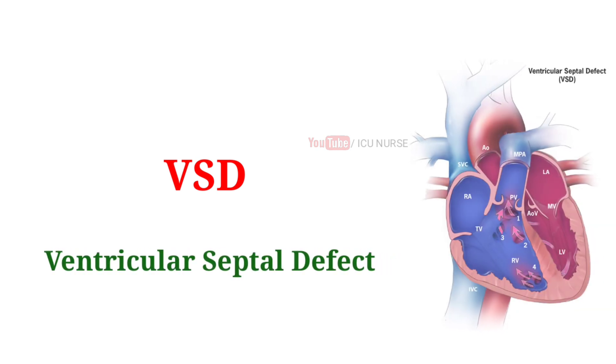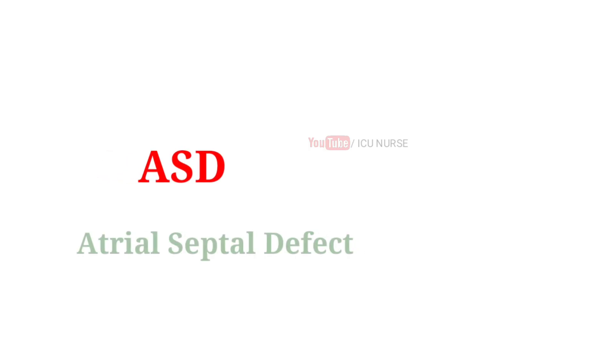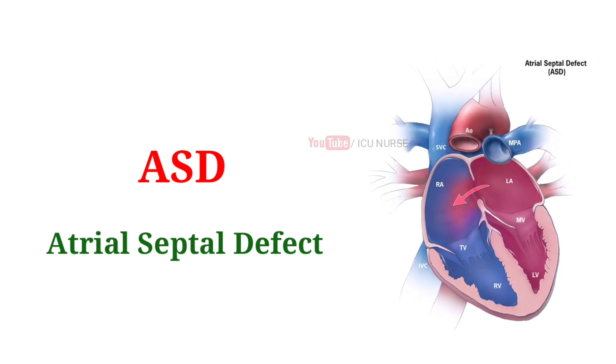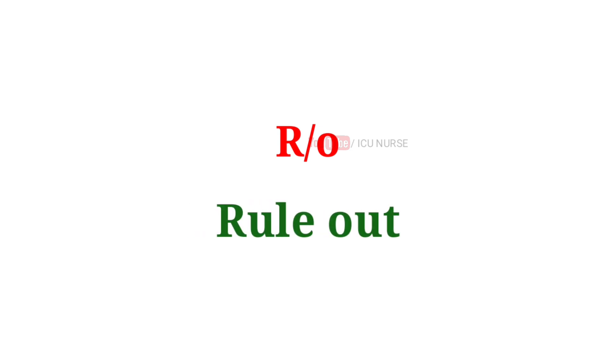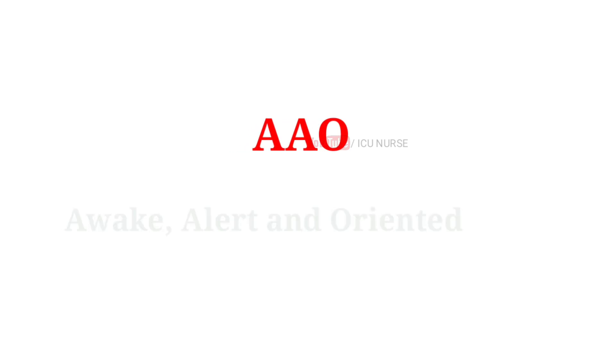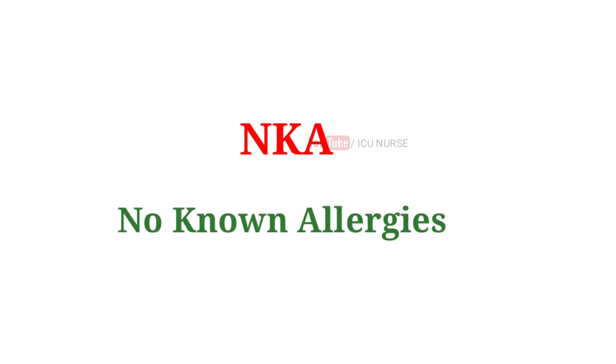VSD: ventricular septal defect. ASD: atrial septal defect. RO: rule out. AAO: awake, alert and oriented.